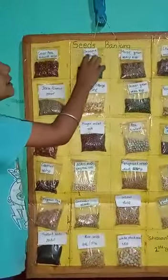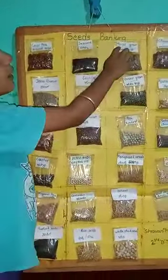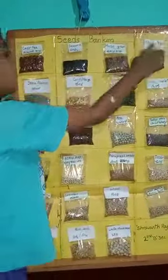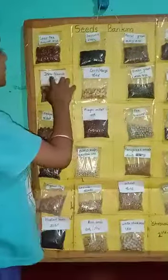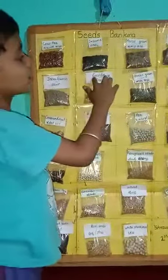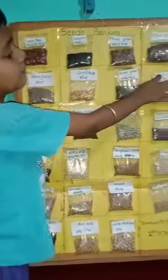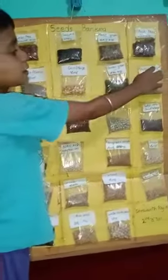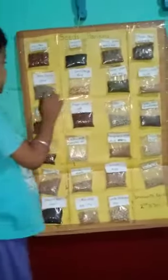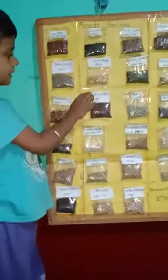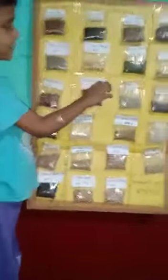Cowpea, sesame, horse gram, chickpea, jeera, corn, green gram, foxtail millet, groundnut, finger millet.